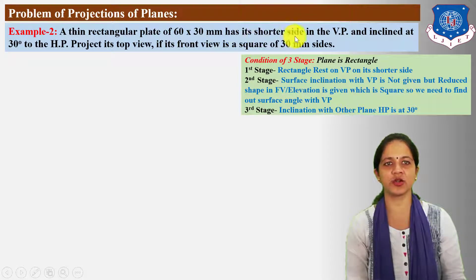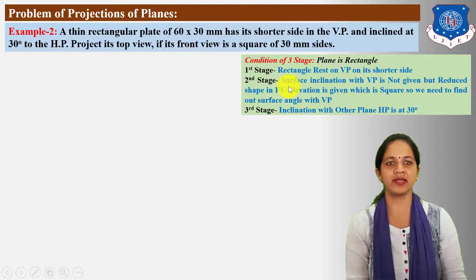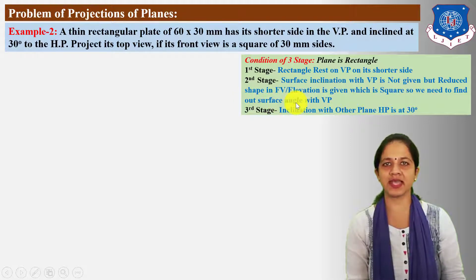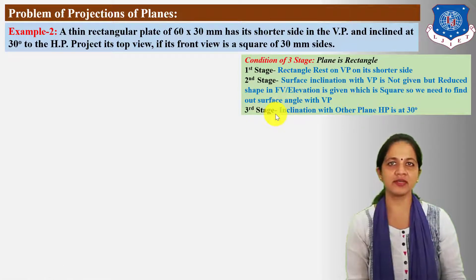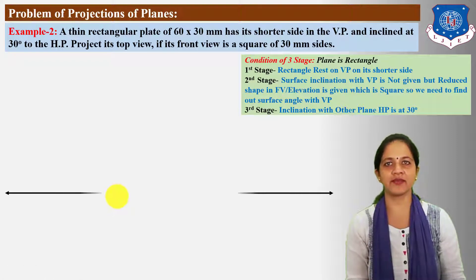The first stage condition: the rectangular plate has its shorter side in the VP, meaning the rectangle rests on VP on its shorter side. In the second stage, we need to take the surface inclination with VP because the plate rests on VP. Here, the surface inclination with VP is not directly given, but the reduced shape in the front view is given as a square, so we need to find the surface angle with VP. In the third stage, the inclination with HP is given as 30 degrees.